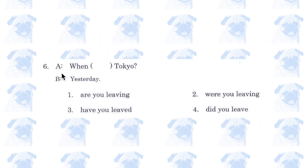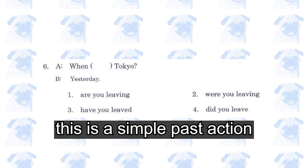Number 6. 'When are you leaving / when were you leaving / when have you leaved / when did you leave Tokyo? Yesterday.' Number 4. Judging from the second sentence, we are dealing with an event that took place in the past. Options 1 and 3 are out, leaving 2 or 4. It wouldn't make sense to say 'when were you leaving Tokyo?' We would simply say 'when did you leave?' because we are talking about a simple action in the past.